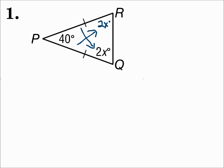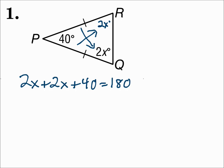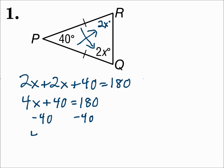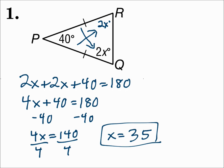Now how can you find x? You can't just say 2x equals 2x — that won't get anywhere. But the three angles of a triangle add up to 180, so: 2x plus 2x plus 40 equals 180. Solving: 4x plus 40 equals 180, subtract 40 from each side, then divide by 4. So x is 35.